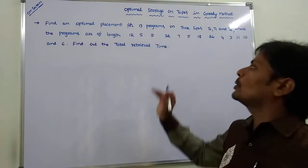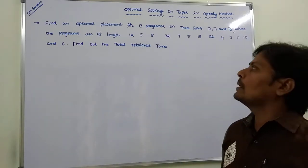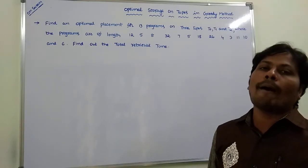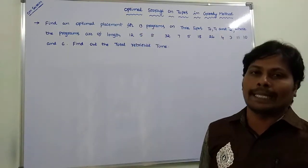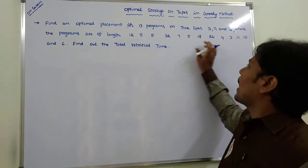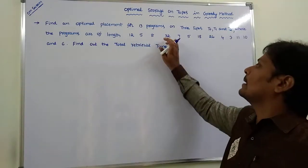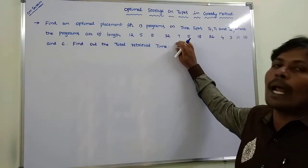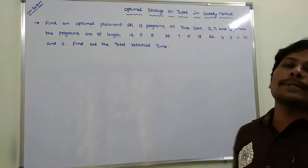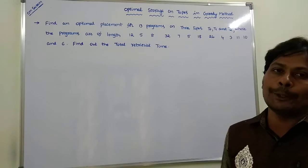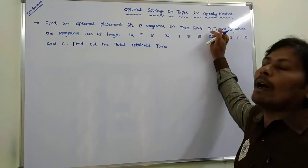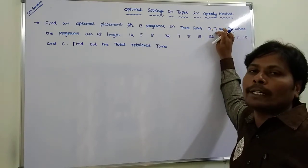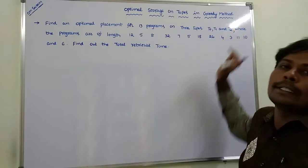Now we will go through an example problem. In this example, there are 13 programs, that is n equals 13. These 13 programs have different lengths. They can be assigned to 3 tapes: T0, T1, and T2. We have to find out the total retrieval time for T0, T1, and T2 tapes individually.